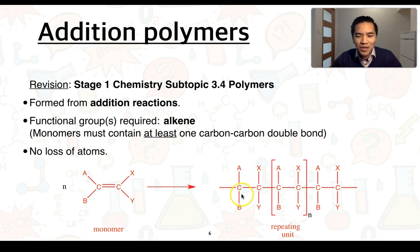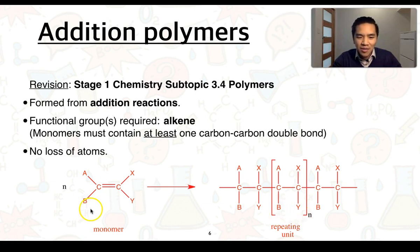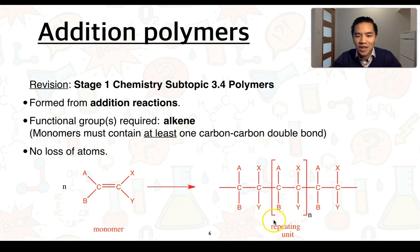We still have those variable groups A, B, X and Y. We can indicate the repeating unit using square brackets with a subscript to show it occurs a number of times. An important distinction is that the monomer has a carbon-to-carbon double bond whereas the repeating unit does not — one is a discrete molecule whereas the other is a repeating structure.